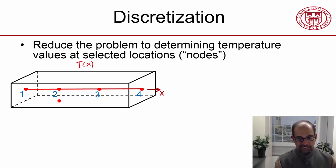And everywhere else, I will just use an interpolation. So if I want to know the temperature here, I'll use an interpolation between that value and that value. If I want to know the temperature here, I'll use an interpolation between that value and that value. It's a linear interpolation.